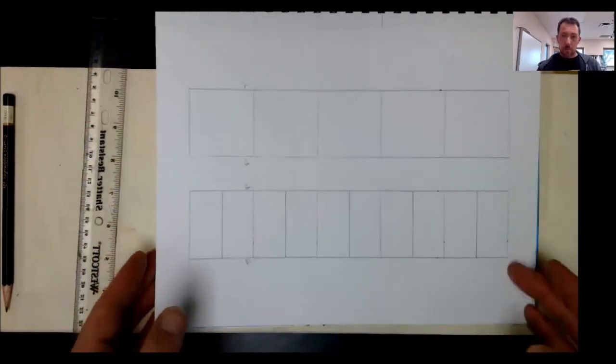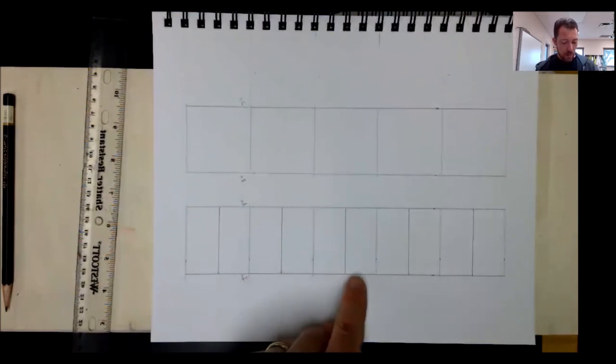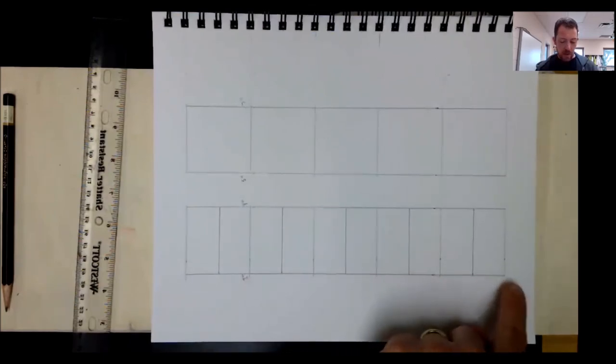So in this case, same measurements except this is 1, 2, 3, 4, 5, 6, 7, 8, 9, 10, 11.